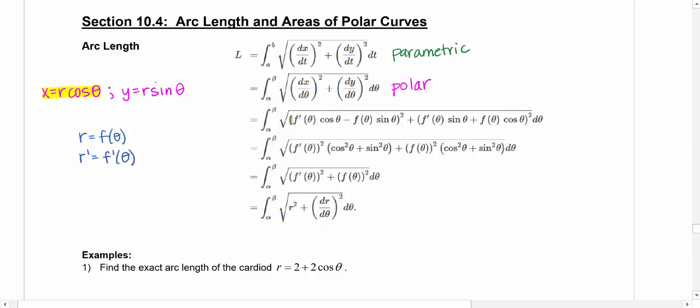And so this first part right here is dx d theta. And this second term here before you square it is dy d theta. Again, just using the product rule from that equation that's in green. And then once you multiply all that out, you're going to see a lot of terms that will be the same.